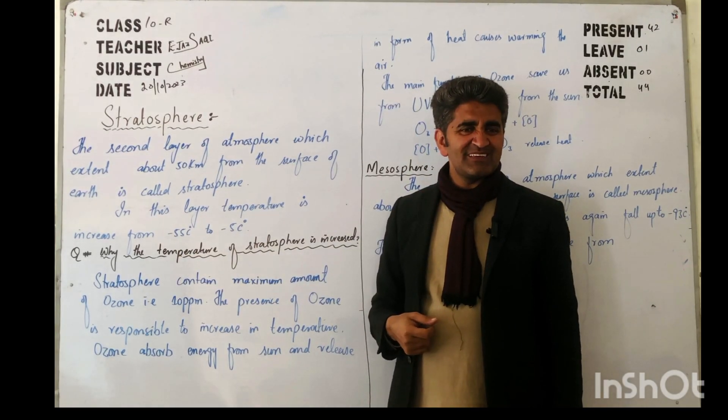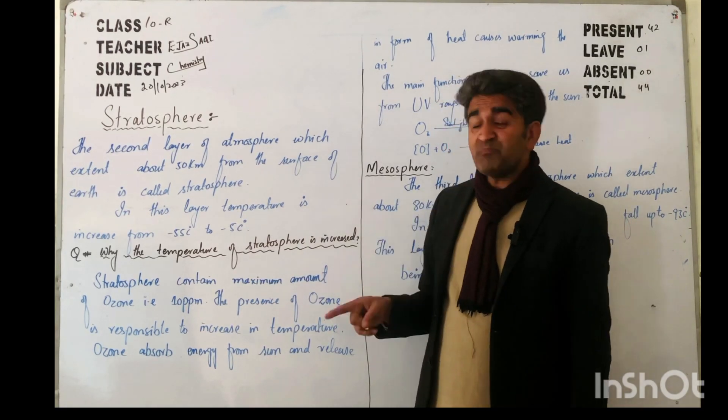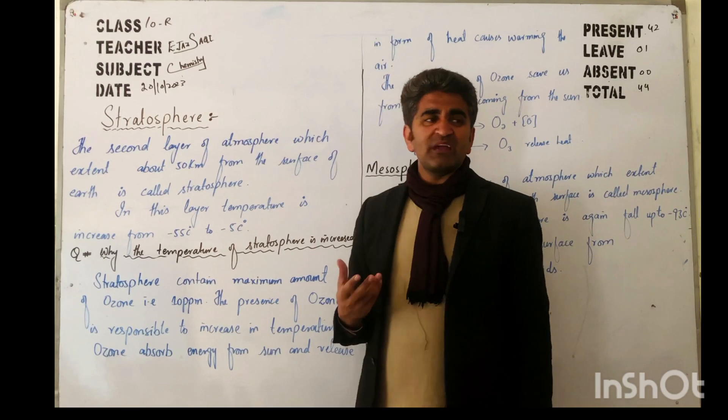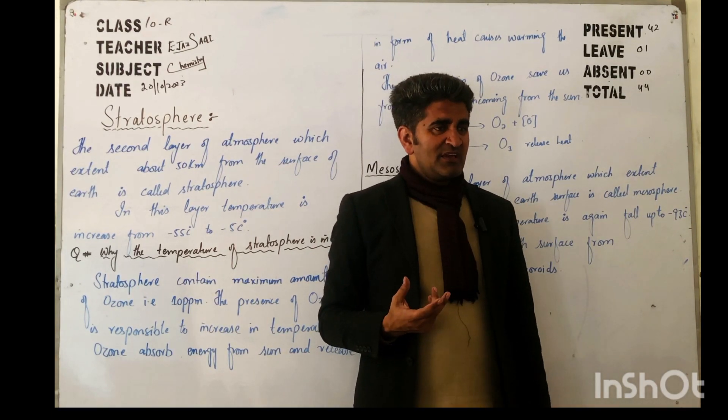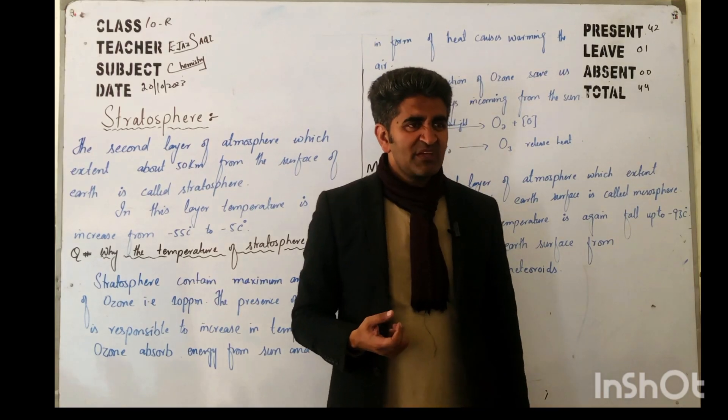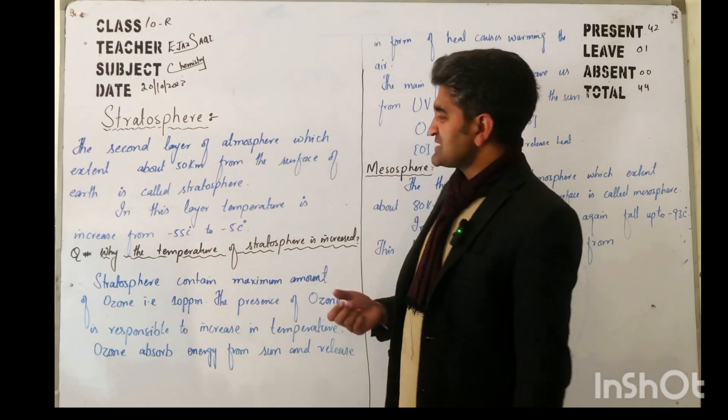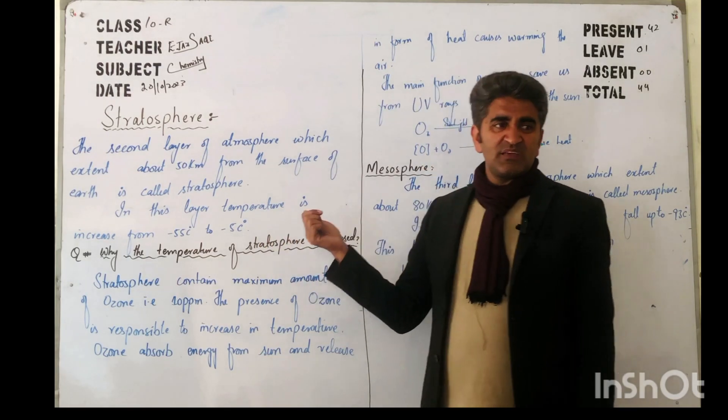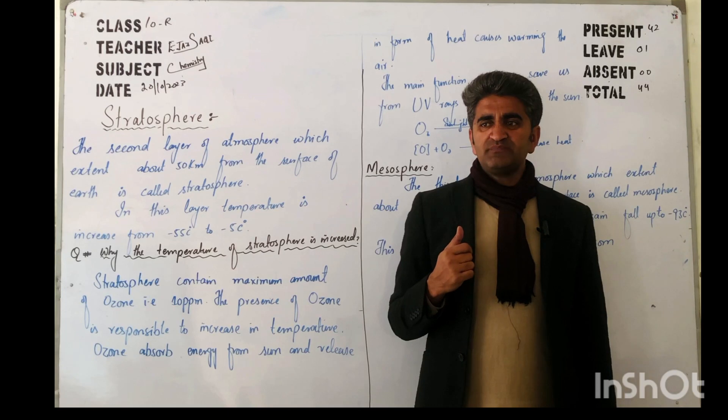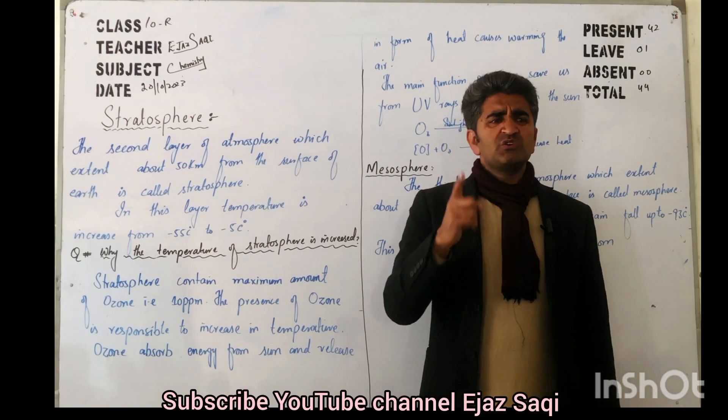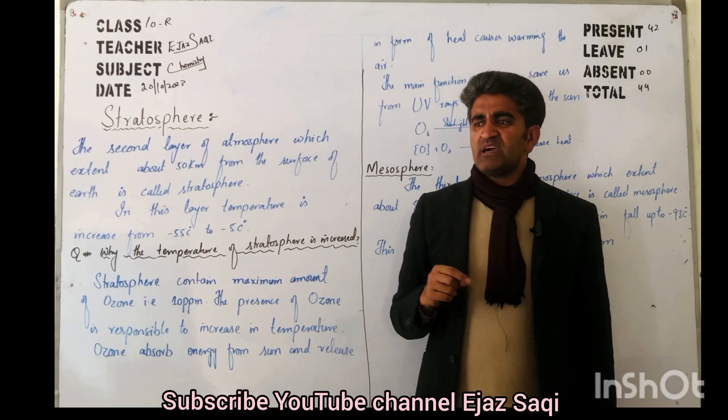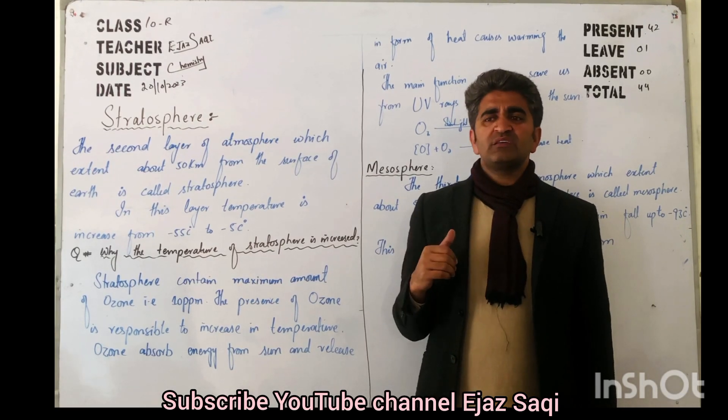Minus sign. Here the temperature of the layer increases. Now what is the reason that temperature suddenly increases? The temperature in stratosphere increases due to the presence of ozone. You keep hearing that ozone is such a layer.